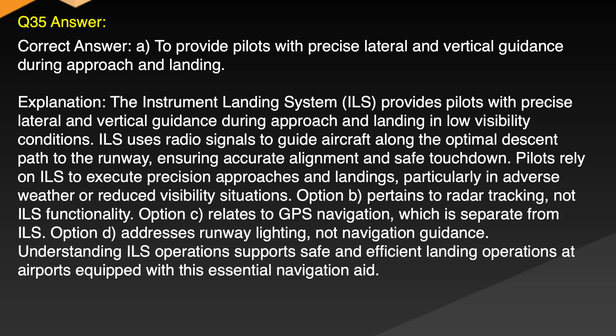Option B pertains to radar tracking, not ILS functionality. Option C relates to GPS navigation, which is separate from ILS. Option D addresses runway lighting, not navigation guidance. Understanding ILS operations supports safe and efficient landing operations at airports equipped with this essential navigation aid.